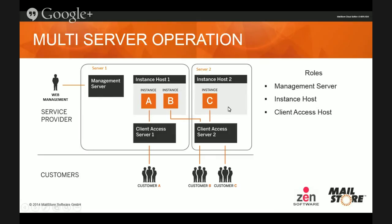Here we've got a scenario with three larger customers. Customer A is connecting through the client access server of Server 1 to their instance, whereas customer B's client access server is on Server 2 — so we're sharing the load. Instances can exist on a server and be accessed through the client access server from either server. This is all very easy to move around in the future if you want to share the load differently or a user grows to a size where their client access requirements would be better suited on a different platform.